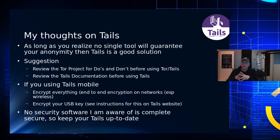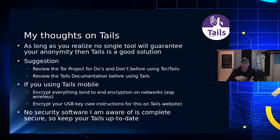I would start with the Tor do's and don'ts — there's a pretty good site for what you should and should not do inside a Tor browser, because there are easy ways you can expose your identity. Review the Tails documentation and the getting-started guide. If you're using Tails mobile, encrypt everything end to end and make sure you're connecting to HTTPS endpoints, because anywhere you're unencrypted a man-in-the-middle can take over your connection — especially in a wireless environment. Also encrypt your USB key if you can, because if you lose it, especially if you have mutable areas on it, you want to protect that data.